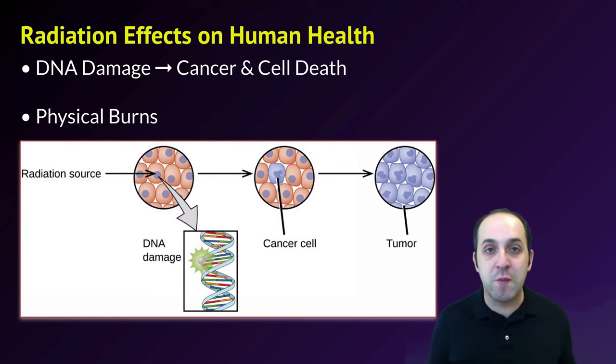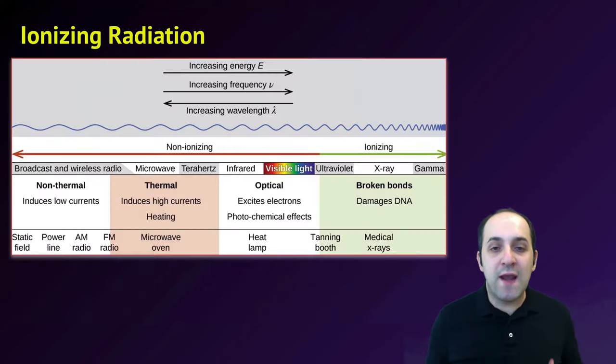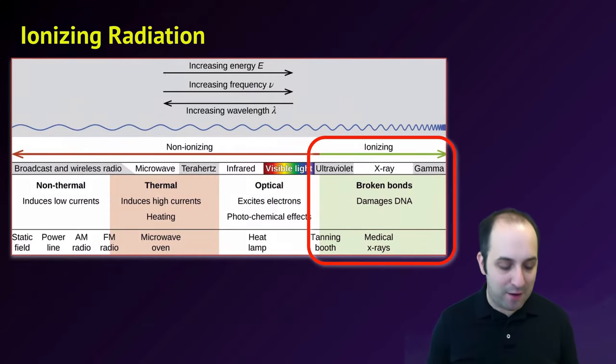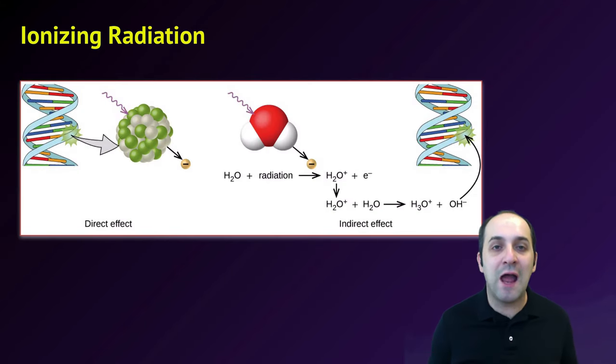Radiation also produces a tremendous amount of heat, and so that heat can produce physical burns. Nuclear radiation is what we'd consider to be ionizing radiation. What we mean by that is that it has enough energy to actually knock electrons off of atoms and cause those atoms to form ions. This causes the ions that are produced to go and react with their surrounding environment.